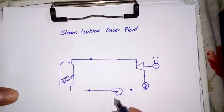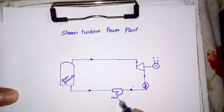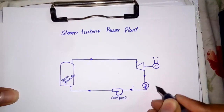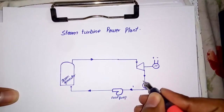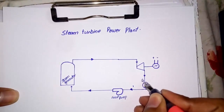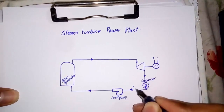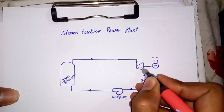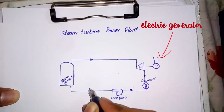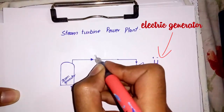The steam generator — this is the feed pump, this is the condenser, the steam turbine, and the electric generator.